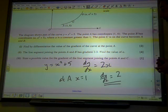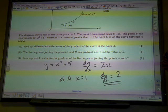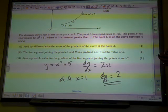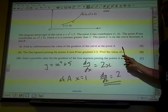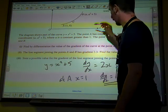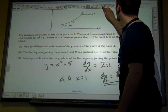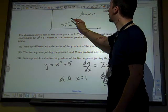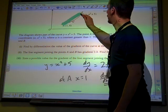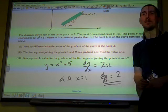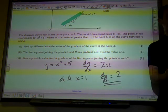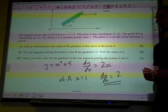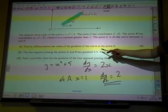Part (ii) now says that the line segment joining points A and B has a gradient of 2.3. Find the value of a. This means that strangely thick line has a gradient of 2.3.